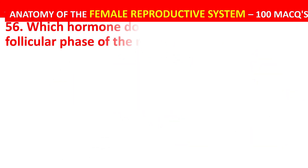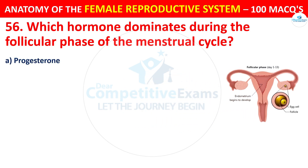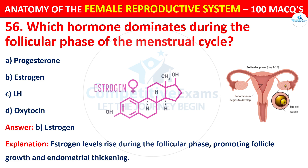Question number 56. Which hormone dominates during the follicular phase of the menstrual cycle? Options: progesterone, estrogen, LH, or oxytocin. The correct answer is B — estrogen. Estrogen levels rise during the follicular phase, promoting follicle growth and endometrial thickening.